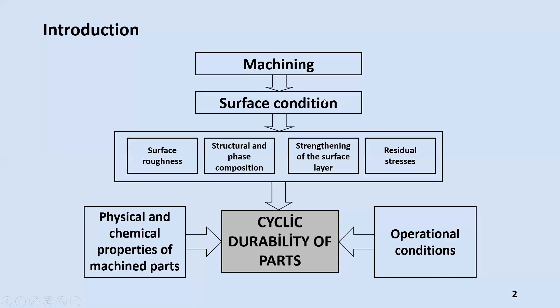More than 70% of all failures of structural elements of machines are related to fatigue failure. The main characteristic of fatigue resistance is cyclic durability. The fatigue resistance of parts is affected by three main groups of factors: geometrical, operational, and manufacturing.